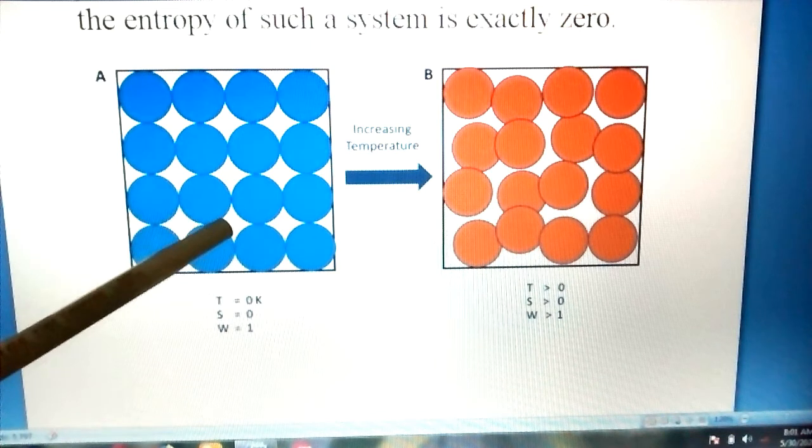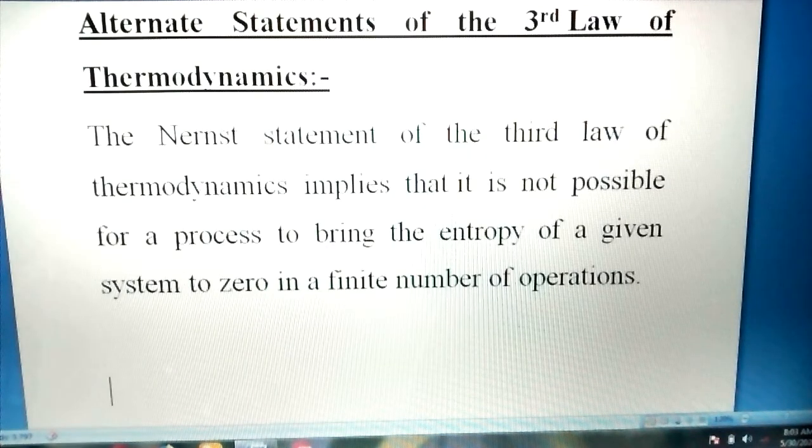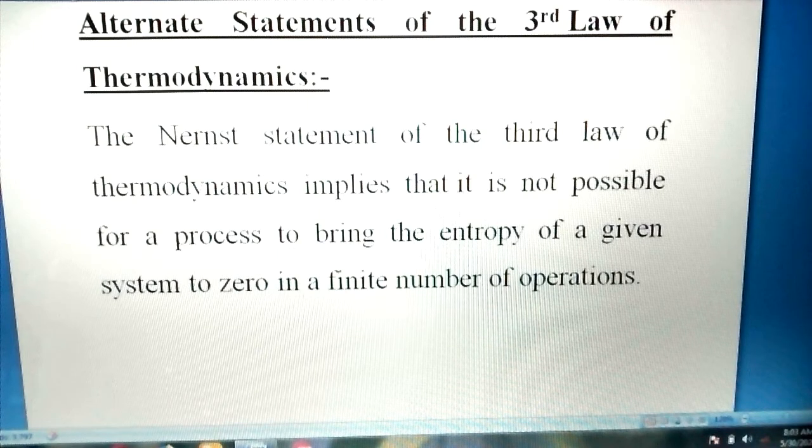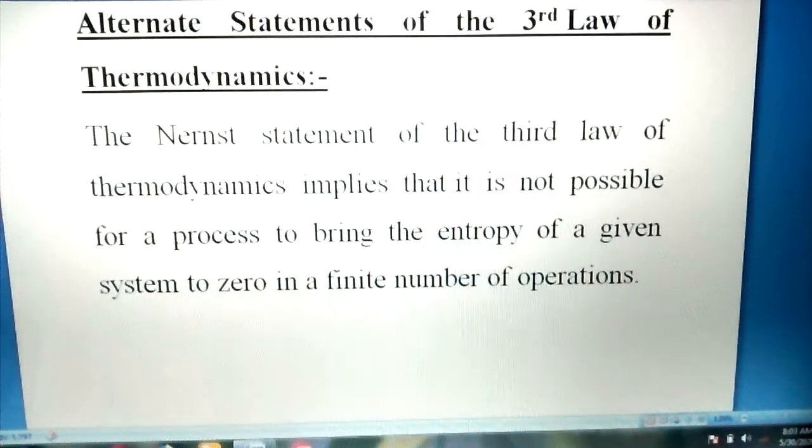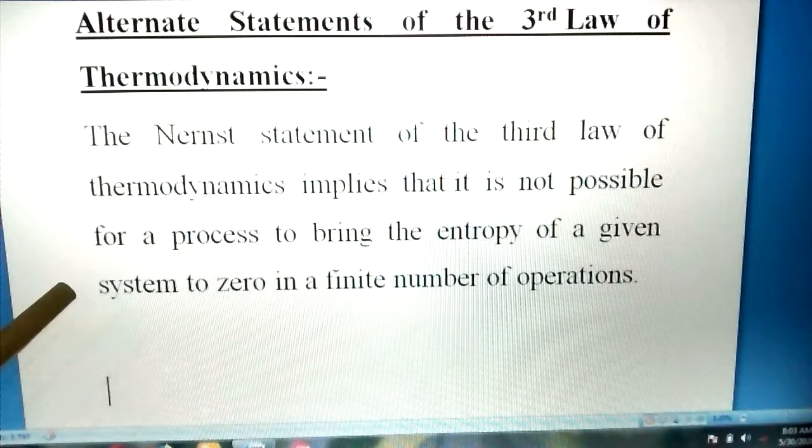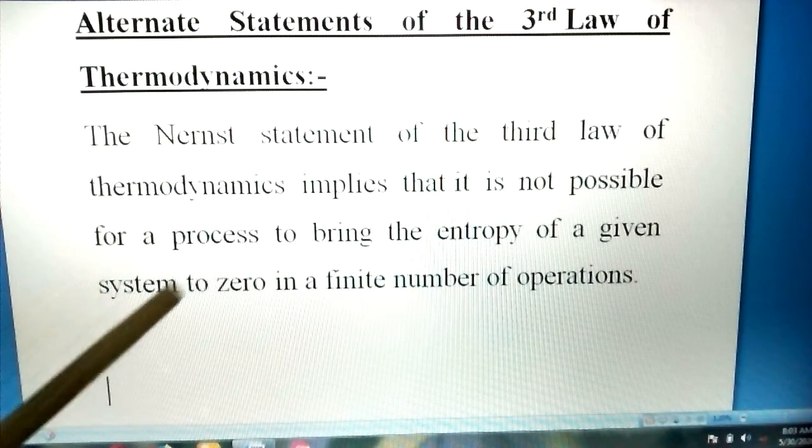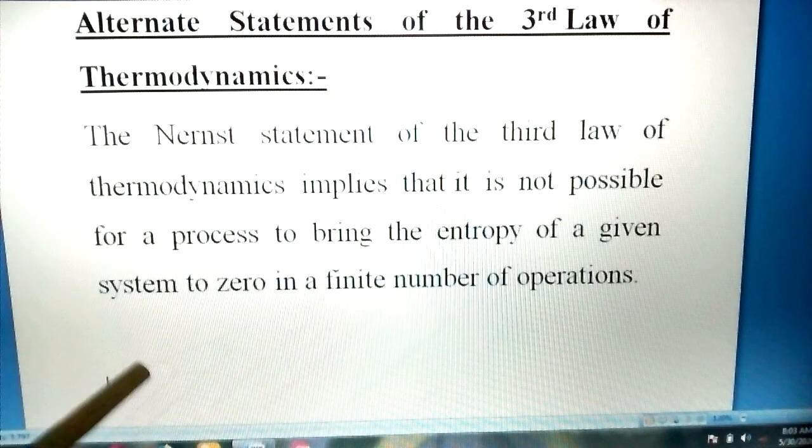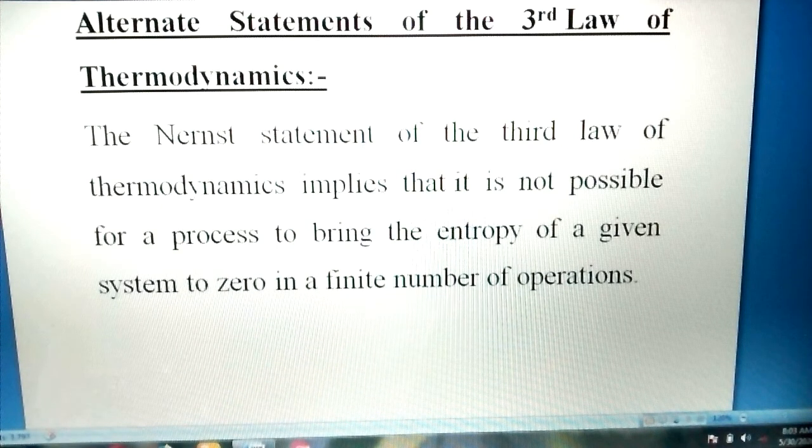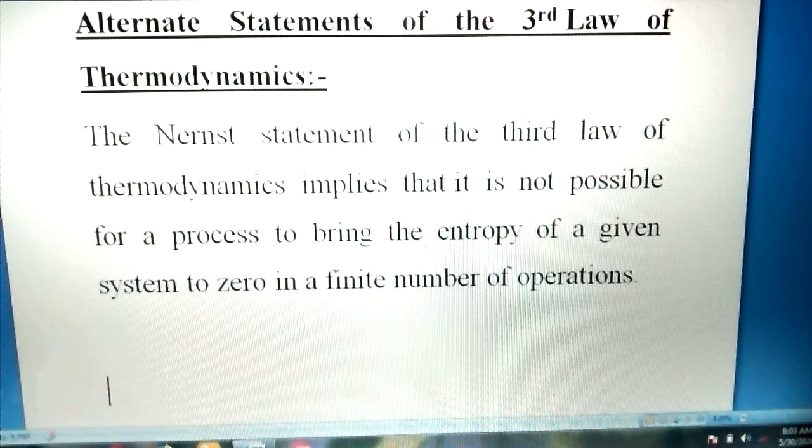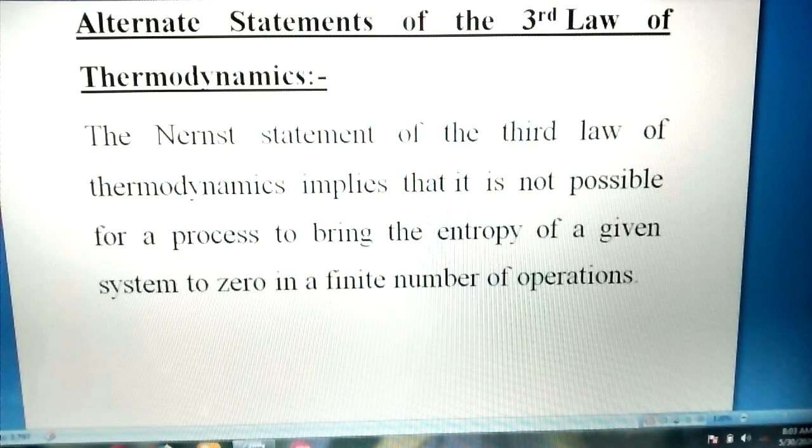There is another statement of the third law of thermodynamics. Nernst, a scientist who gave this thermodynamic law, said that it is not possible for a process to bring the entropy of a given system to zero in a finite number of operations. That means if a number of operations are operating, we cannot bring the system to zero entropy.